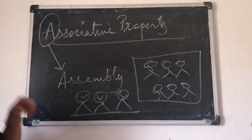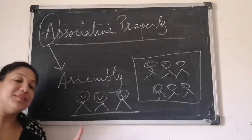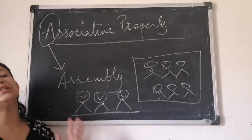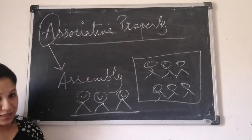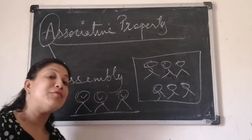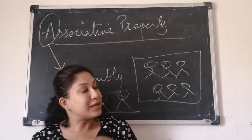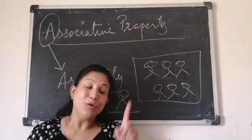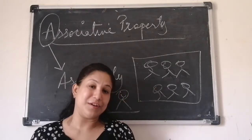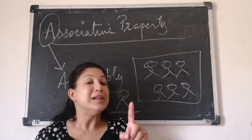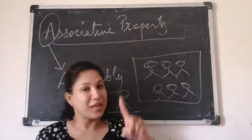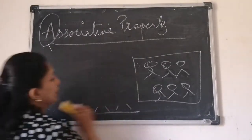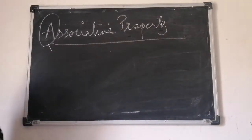For commutative property, we have learned that it is only for two integers, for addition and for multiplication. I told you to link it with the word company — one is single, two is company. Now for associative property, we will every time keep this in mind: A for assembly, A for associative. Let us see what this property is about.